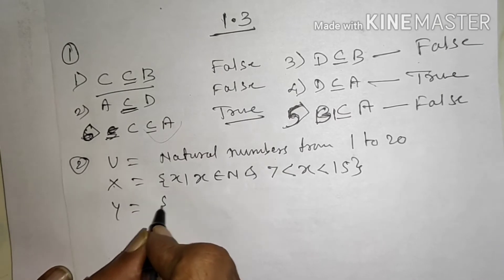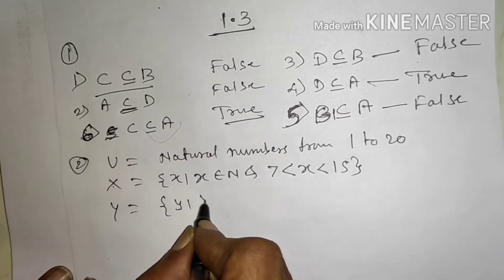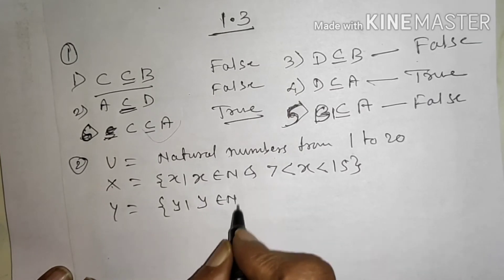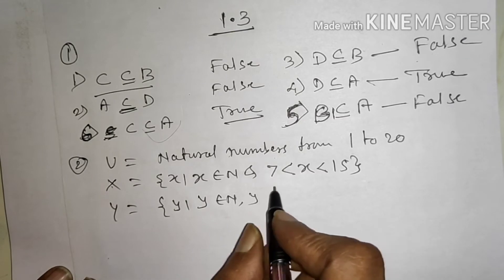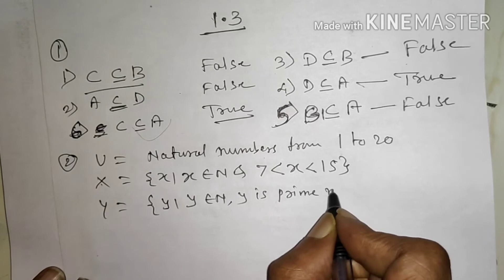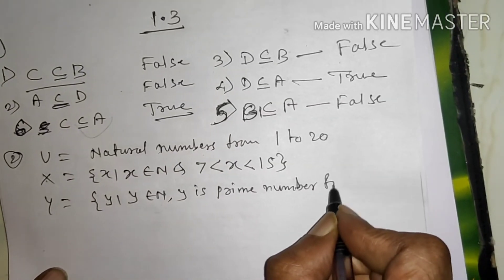And Y di Y bar Y belongs to N, Y is prime number, Y is prime number from 1 to 20.